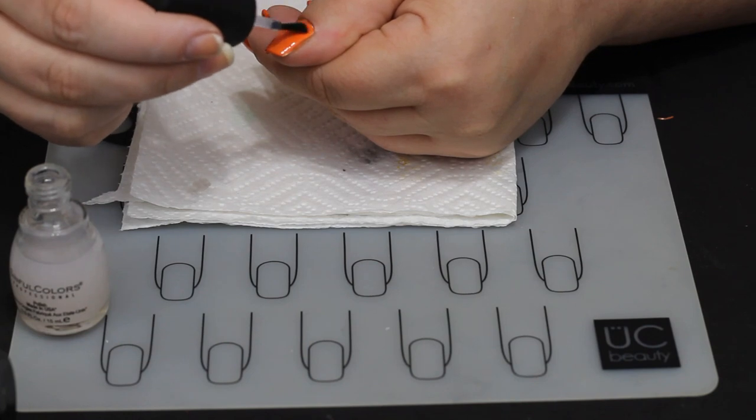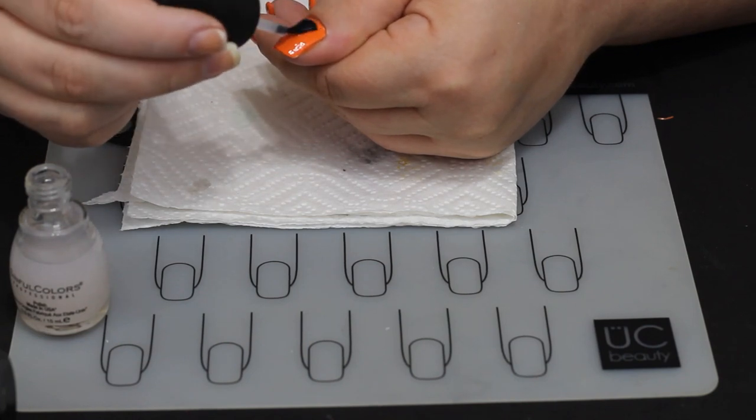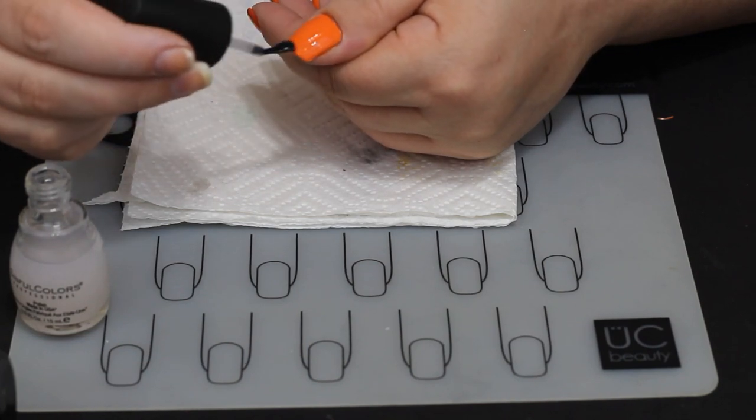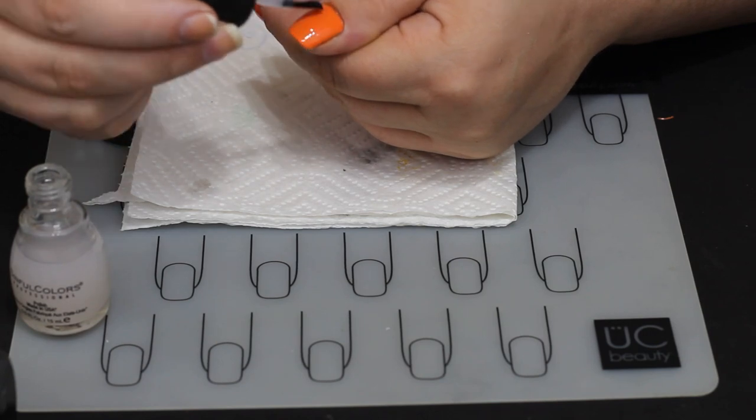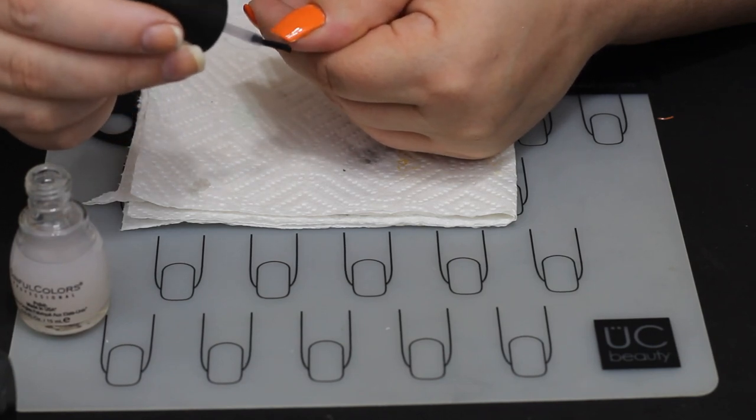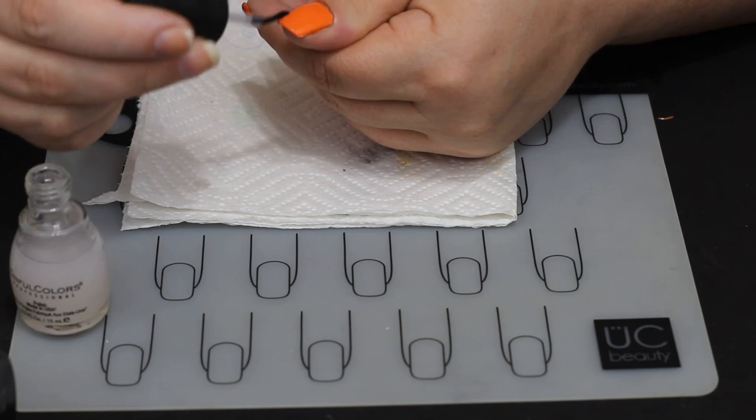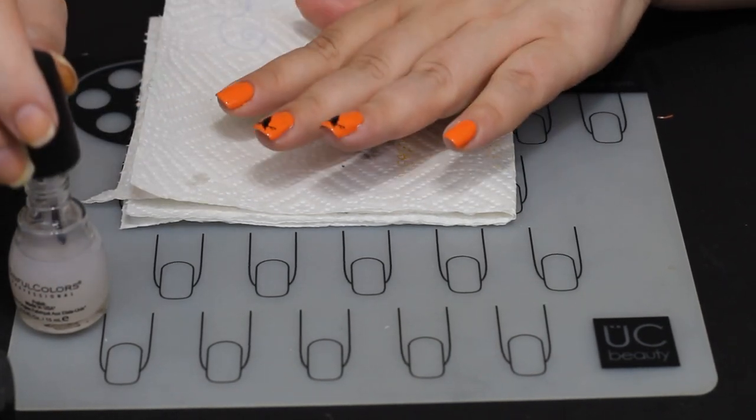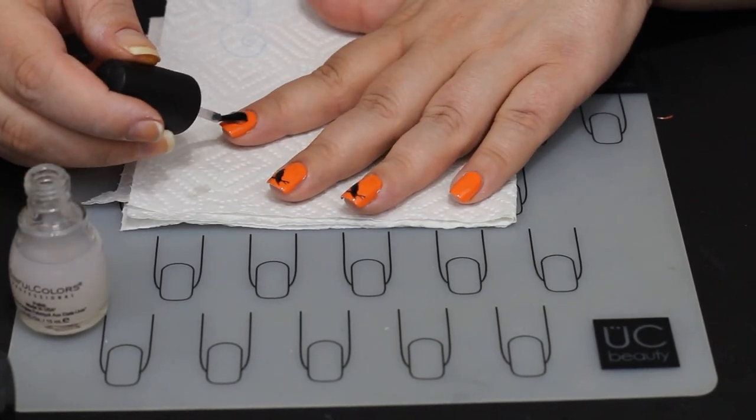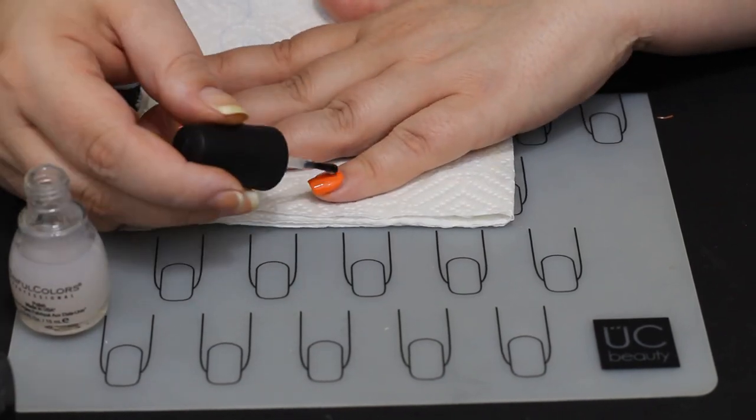You do not want the brush to press into your stamping. If you let the brush drag through your stamping, if you let it drag through, it can ruin the entire image. It'll smear it and it doesn't matter if it says it's a no-smear topcoat or not.